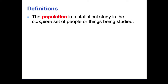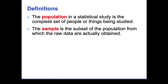The population in a statistical study is the complete set of people being studied. But there's also something called a sample. If it were possible to survey everyone in the city of Los Angeles, you almost wouldn't even need statistics. But obviously, giving everyone in Los Angeles some sort of survey would be impractical, so you'd more likely use a sample — a smaller group of people chosen from that population.